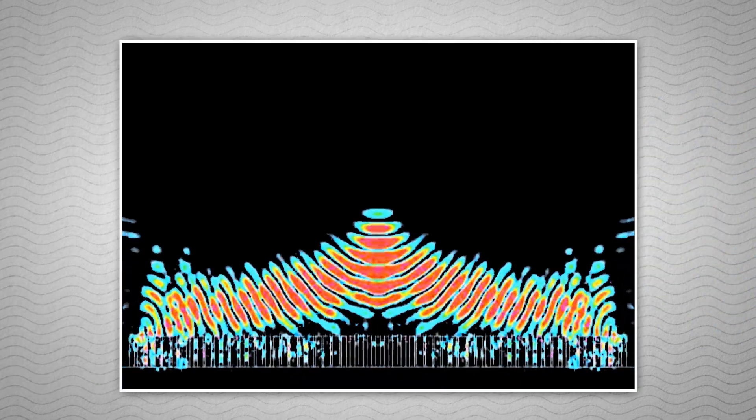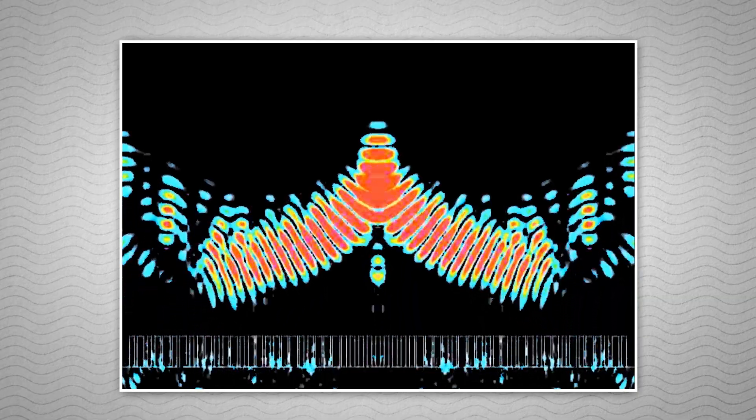In the metasurface lens, the transparent blocks also bend the light toward the focal point, matching what happens in the glass lens, but with much less material.